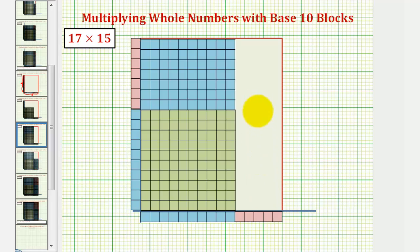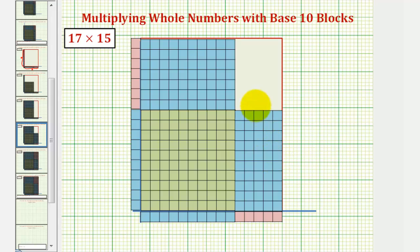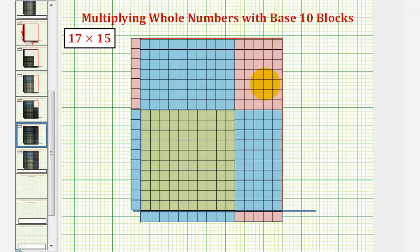Now looking at the right side of the rectangle, notice how we can fit one, two, three, four, or five more 10 blocks in the lower right-hand corner, which would look like this. And then finally, we can fit a bunch of 1 blocks. This is five by seven. So we can fit 35 1 blocks in the upper right-hand corner, which would look like this.